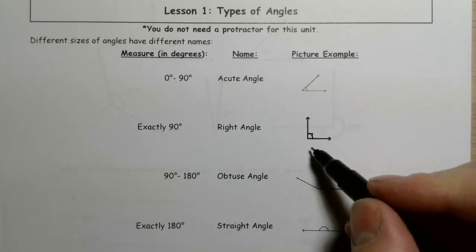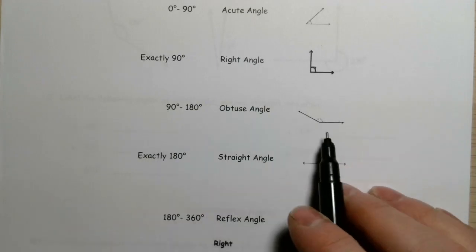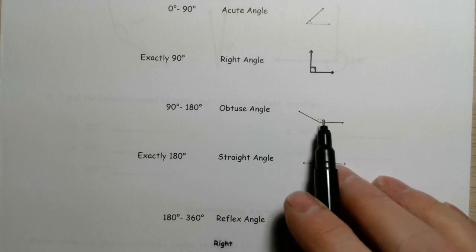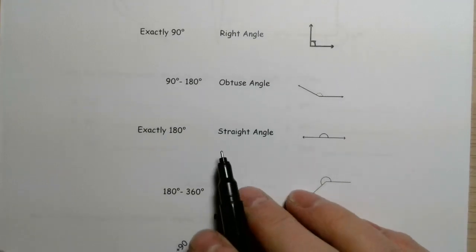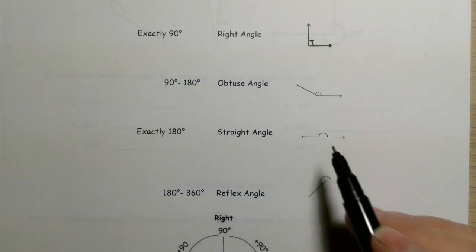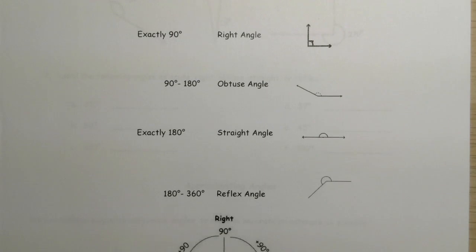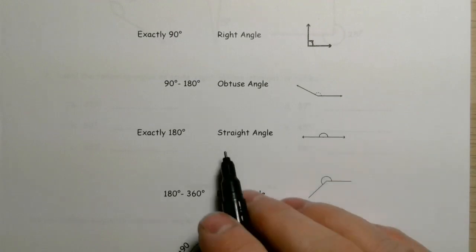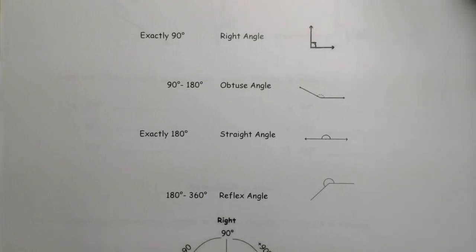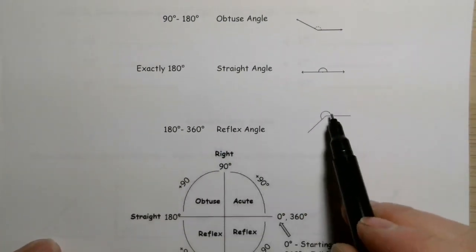If it's from 90 to 180 degrees — so if it's larger than 90 — then it's an obtuse angle. And if it's exactly 180 degrees, we call it a straight angle. You might not even look at that and think there's an angle there — you might just see it as a straight line. But that's why we call it a straight angle. And if the angle happens to be larger than 180 degrees, we call it a reflex angle.